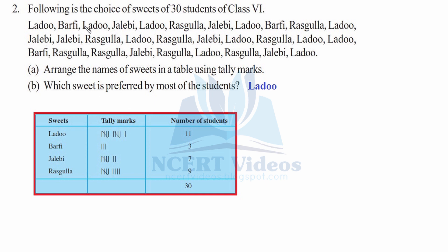For the first sweet, we mark one time, second time, third time, fourth time, and on the fifth time we slash it because every fifth mark gets a slash through the previous four. We find it a sixth time, seventh, eighth, ninth, and tenth — slash again. We get a total of 11 times.